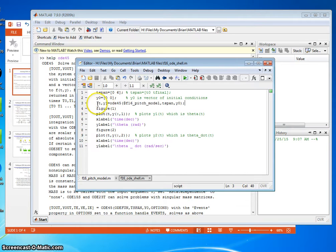T and Y are the outputs of ode45. ode45 is the MATLAB command. This is important: put the @ symbol before the name of your function file. So @F16_pitch_model was the name of our function file. tspan we just defined, and initial conditions we just defined.